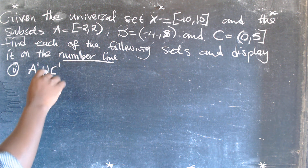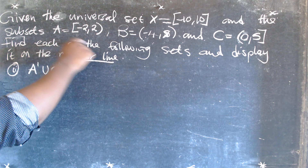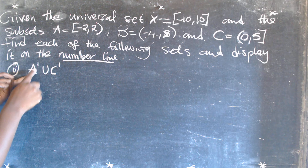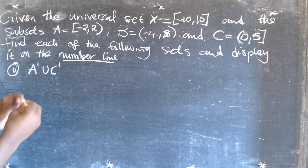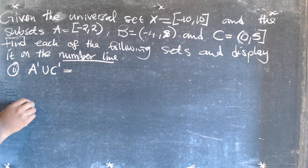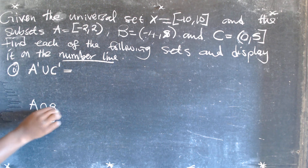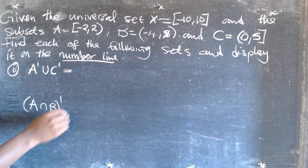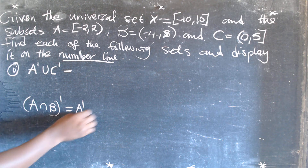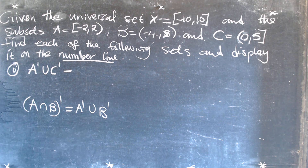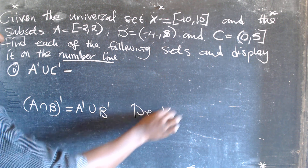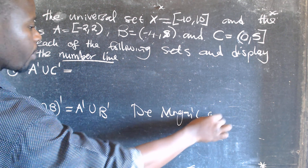Given this set, we have the universal set and sets A, B, and C. According to this question, we're supposed to find a complement. You should remember that when we have A intersection B, all complement, this is the same as distributing the complement inside — A complement, you change the sign to union, B complement. This is what we call De Morgan's Law.